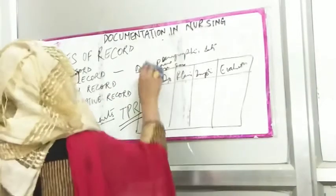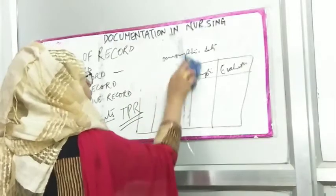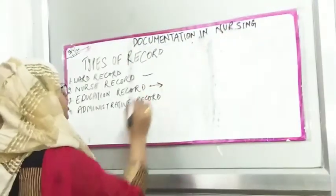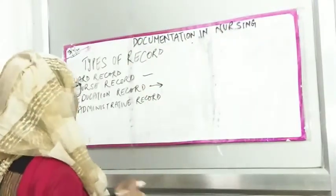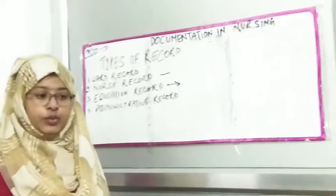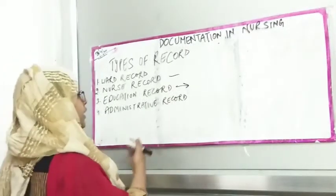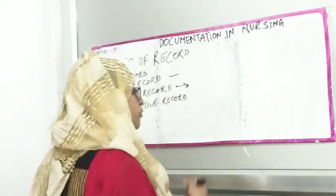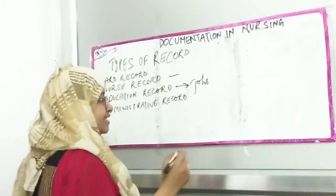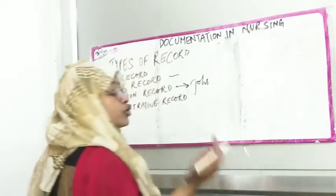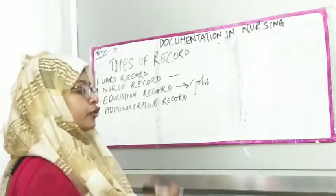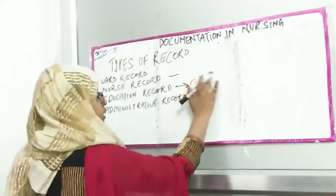Next is the education record. As a nursing student or college student, the education records document your qualifications, what courses you have completed, and related academic records. These are your education records.